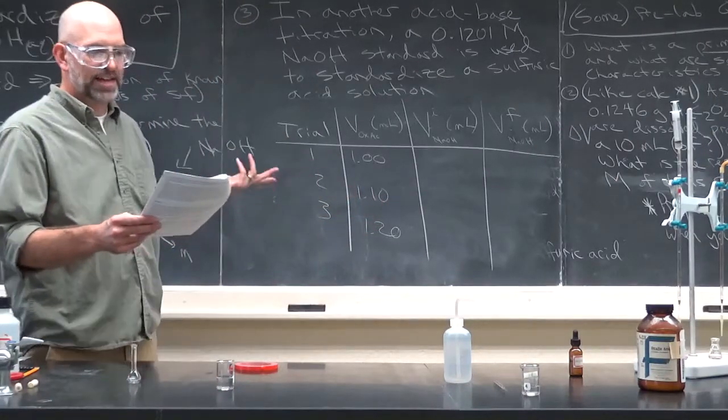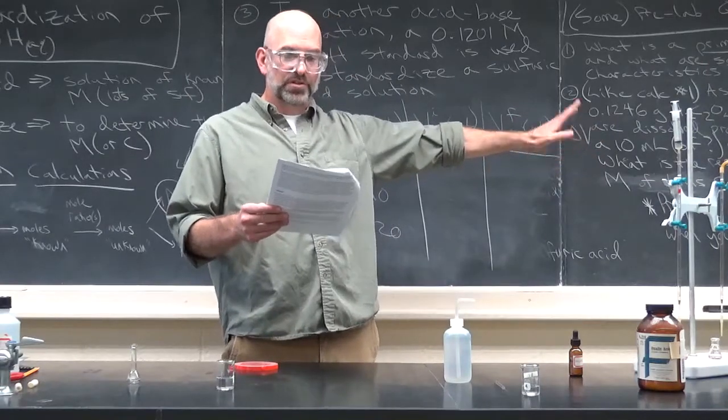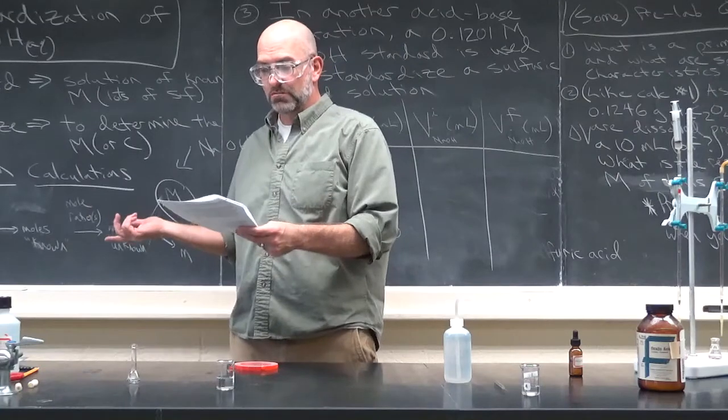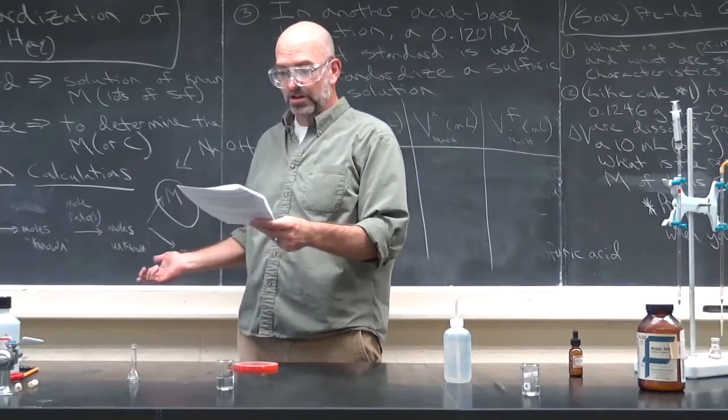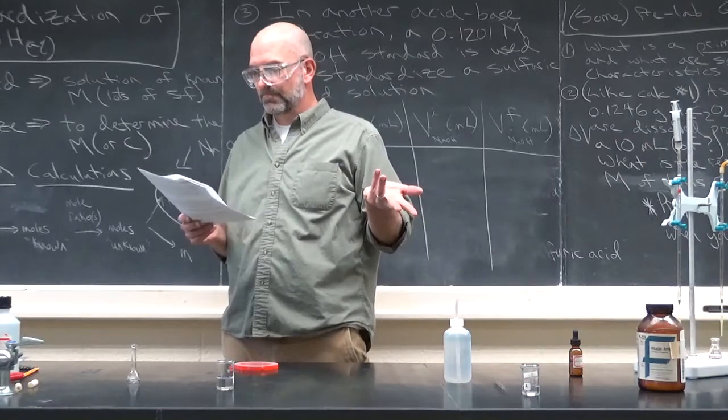And again, progressively more oxalic acid should lead to a progressively larger volume of total to do the titration. And everything else is a calculation. Calculate the concentration of your oxalic acid in the volumetric flask. That's calculation 1. Use the result from number 1 to do the concentration of NaOH, which is a multi-step calculation. Then do an average and a standard deviation. Excellent.